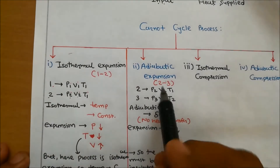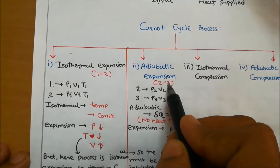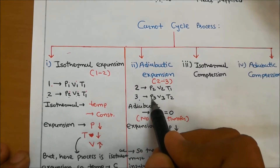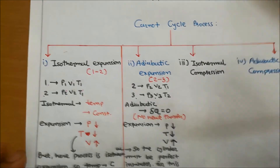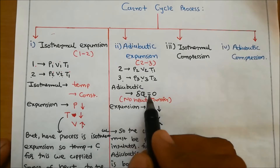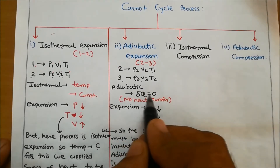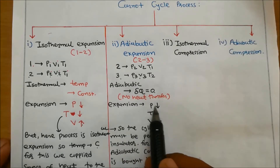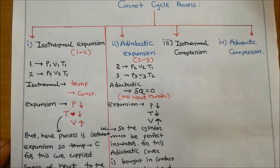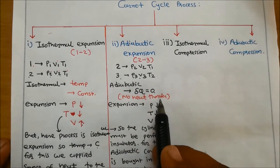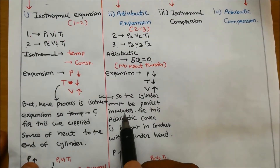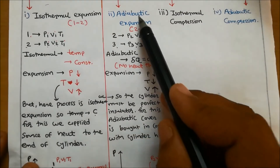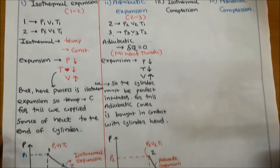The adiabatic expansion process takes place from point 2 to point 3. At point 2, pressure is P2, volume is V2, and temperature is T1. At point 3, pressure is P3, volume is V3, and temperature is T2. Adiabatic expansion means no heat transfer — delta Q equals zero. Since the cylinder must be a perfect insulator, an adiabatic cover is placed in contact with the cylinder head.